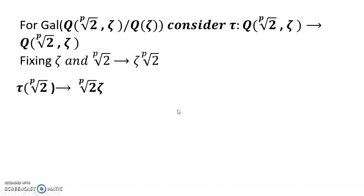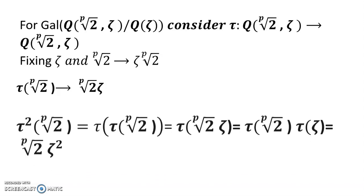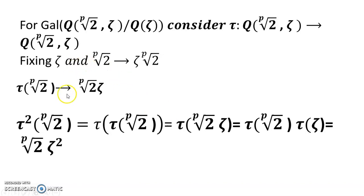Define automorphism τ such that τ(2^(1/p)) = 2^(1/p) · ξ. Then τ²(2^(1/p)) = τ(τ(2^(1/p))) = τ(2^(1/p) · ξ) = τ(2^(1/p)) · τ(ξ), and we get the corresponding value.